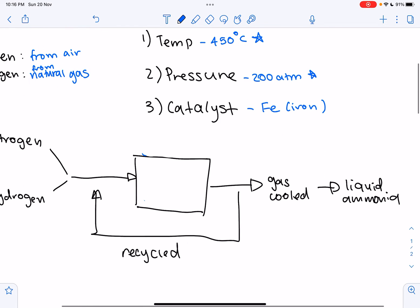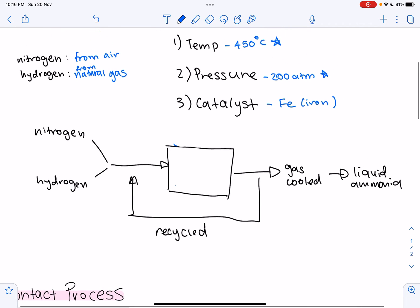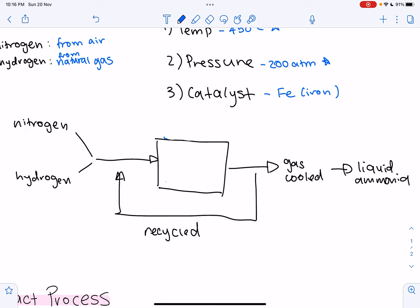So now let's look at our reaction in a little bit more detail. So as you can see, we start with our nitrogen and hydrogen gas, and then it goes through this, which is the converter. And in this converter, we have our 450 degrees Celsius temperature, our 200 atm pressure, and our iron catalyst.